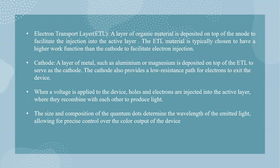The electron transport layer is a layer of organic material deposited on top to facilitate electron injection into the active layer. The cathode is a layer of metal such as aluminum or magnesium deposited on top of the electron transport layer. When a voltage is applied, holes and electrons are injected into the active layer where they recombine to produce light. The size and composition of the quantum dots determine the wavelength of the emitted light, allowing for precise control over the color output.